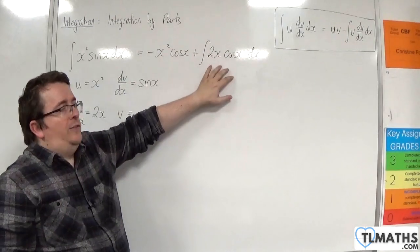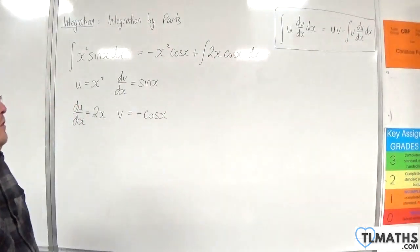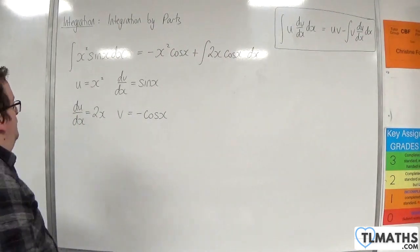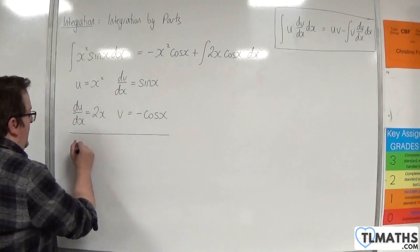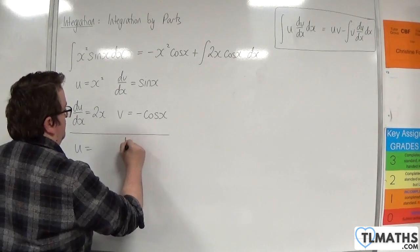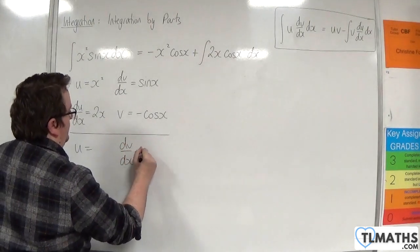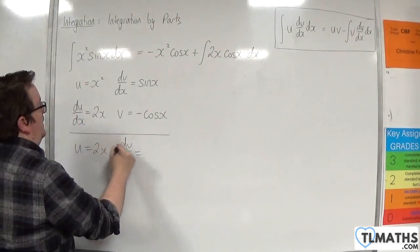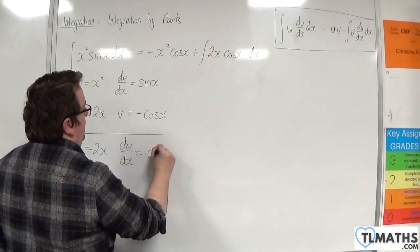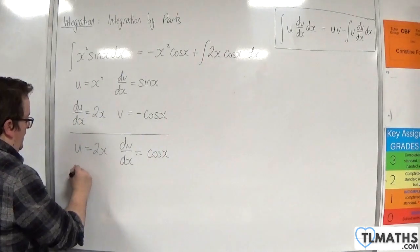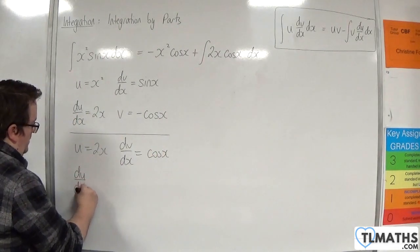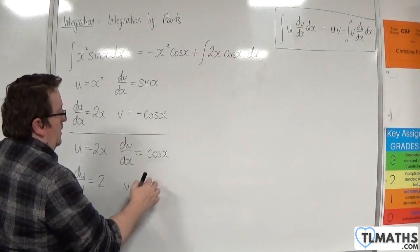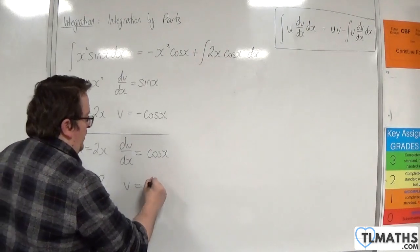Now the 2x cosine x in the integral needs to be integrated by parts, so we will do it again. Using the LIATE rule, 2x will be the u and dv by dx will be cosine x. So du by dx will be 2, and v will be the integral of cosine x, which is sine x.